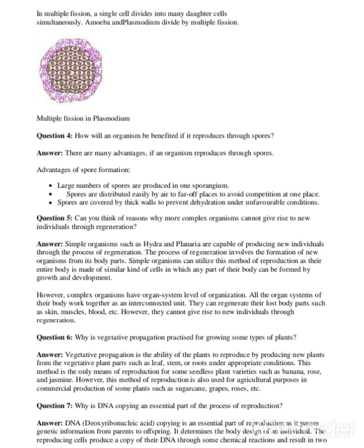Fourth question: how will an organism be benefited if it reproduces through spores? The advantages of spore formation are: first, a large number of spores are produced in one organism — large numbers are necessary because many are lost. Second, spores are distributed easily by air to far away places, which avoids competition for food and water at one place. Third, spores are covered by thick walls, which prevents dehydration and helps them survive under unfavorable conditions.